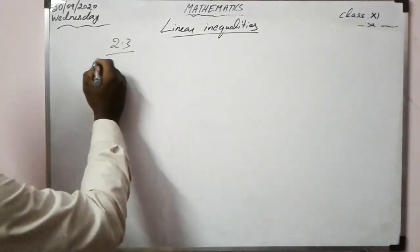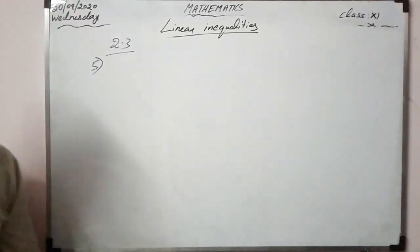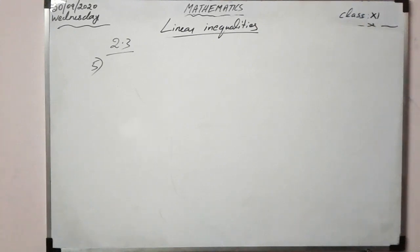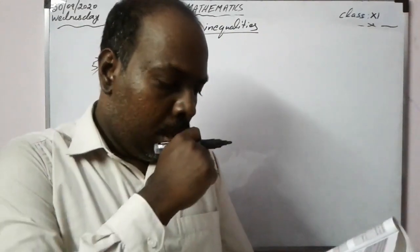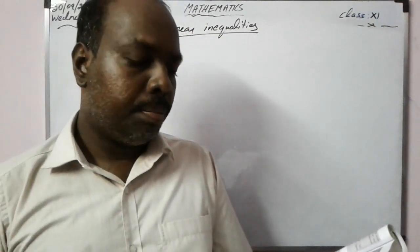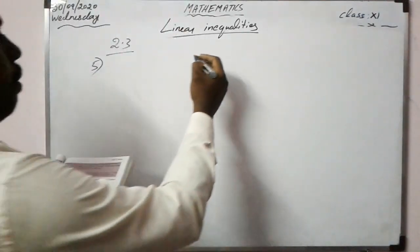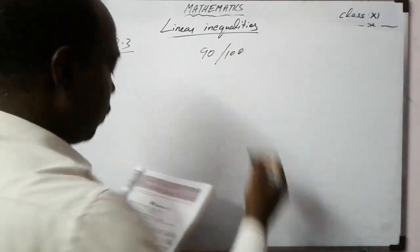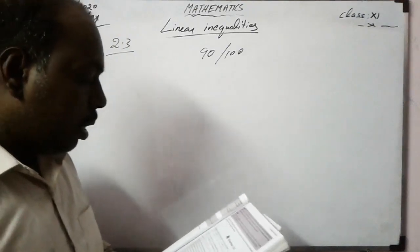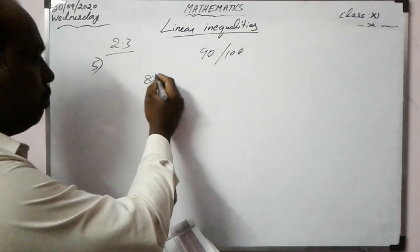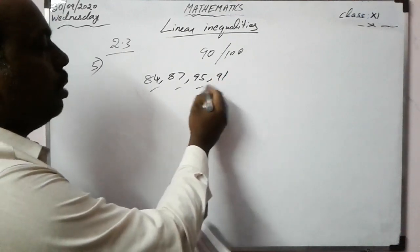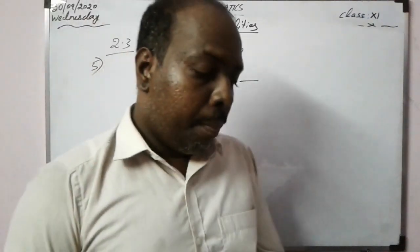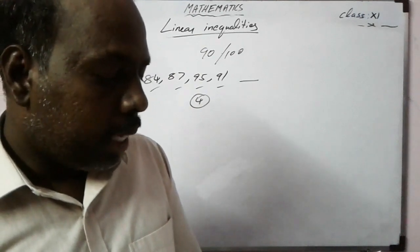Fifth question: To secure an A grade, one must obtain an average of 90 marks or more in 5 subjects, each with a maximum of 100 marks. If one scores 84, 87, 95, and 91 in the first four subjects, what is the minimum mark needed in the fifth subject to get an A grade?